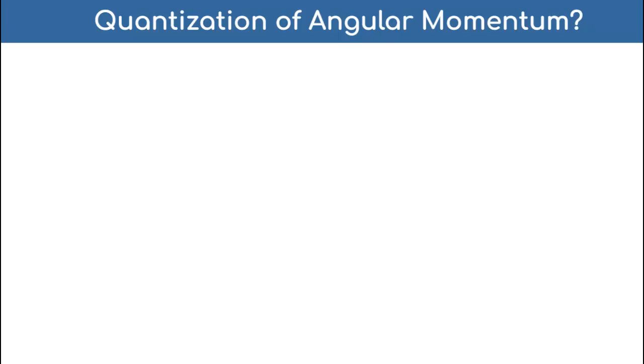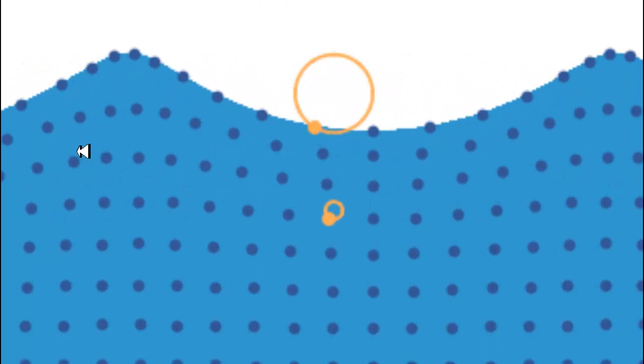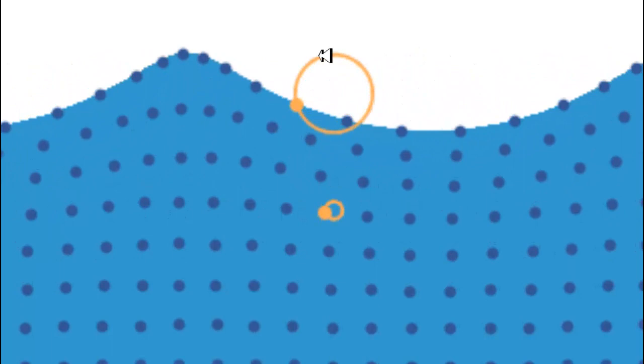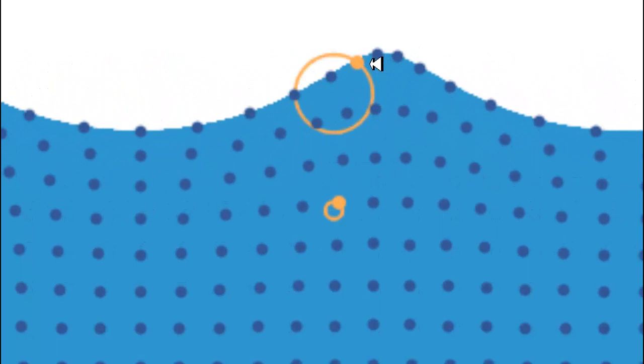Today I want to talk about quantization of angular momentum, and in particular the quantization of angular momentum in wave phenomena. From a previous video I showed you this animation of a surface wave of water - a water wave, an interface wave between water and air. As the air blows in this direction it causes the molecules in the water to take on circular motion, and that circular motion is responsible for the creation and propagation of a wave on the water in the direction of the wind. The important part here is this circular motion.